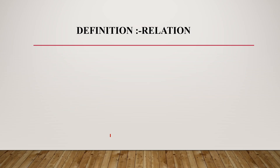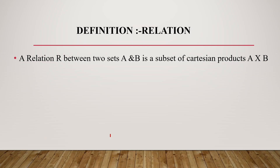Starting with the definition of a relation. What is a relation? In mathematics, a relation between two sets A and B is a subset of the Cartesian product A cross B. It is a set of ordered pairs of A and B.